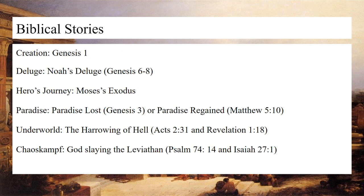Next is the Bible — Judeo-Christian works. The creation in biblical terms can be found in Genesis chapter 1, where it details God creating the heavens and the earth and all the creatures therein. In Genesis 6 through 8, you can find Noah's Deluge, where God chooses Noah to build an ark, take his family and the animals onto it, and ride out the coming flood sent to wipe out humanity's wickedness. After the water subsides, Noah sacrifices to God, renewing God's covenant with humanity.